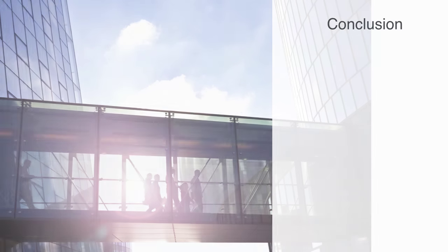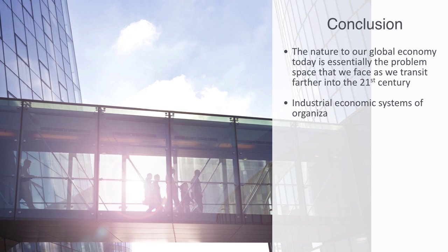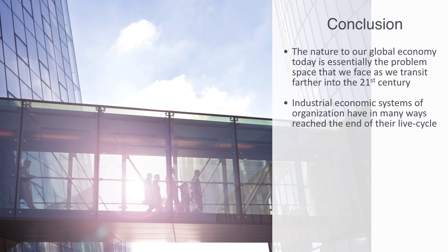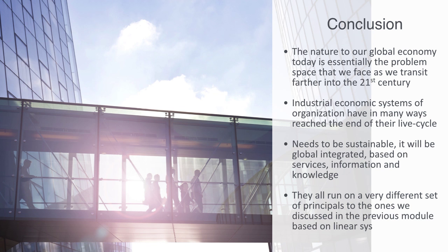What we've tried to outline in this overview is the problem space. Our national industrial economic systems and organization have in many ways reached the end of their cycle, and we're challenged with building a next generation economy. It's becoming more apparent what it will be: globally integrated, based on information and knowledge. As we've seen from this module, there are many challenges — to collaborative organizations, global supply chain networks, and the circular economy. They all run on a very different set of rules, pointing toward the need for complexity economics.